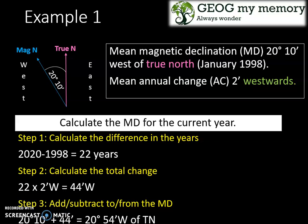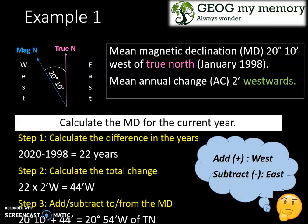Step 3: add or subtract to or from the magnetic declination. Many students get confused about when to add and when to subtract. You should add when the direction is west, and subtract when the direction is east. So 20 degrees 10 minutes plus 44 minutes gives 20 degrees 54 minutes west of true north.